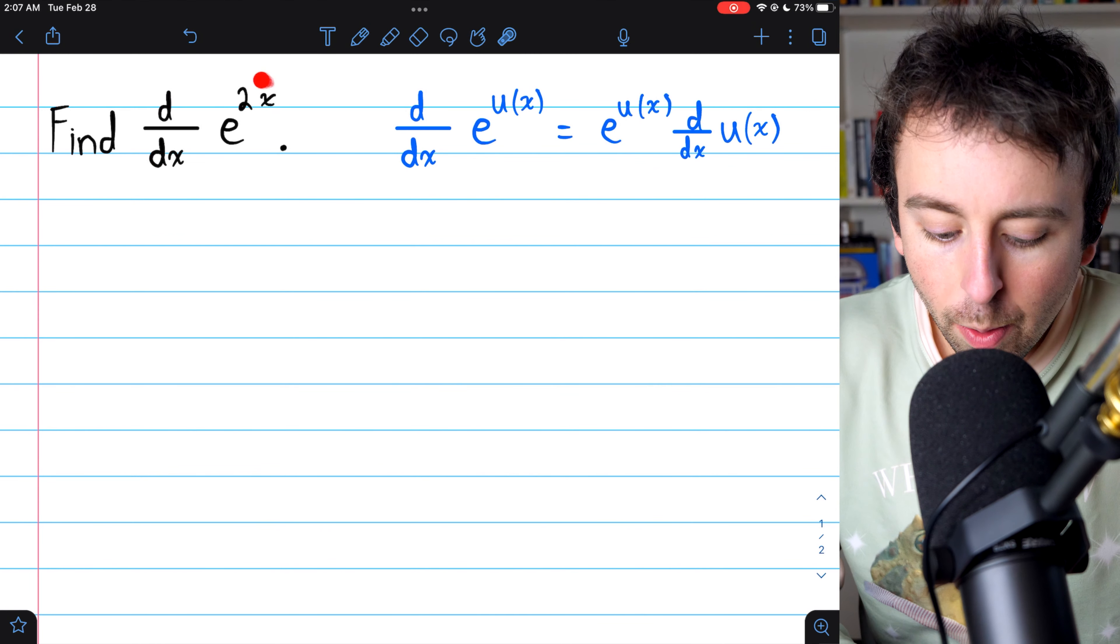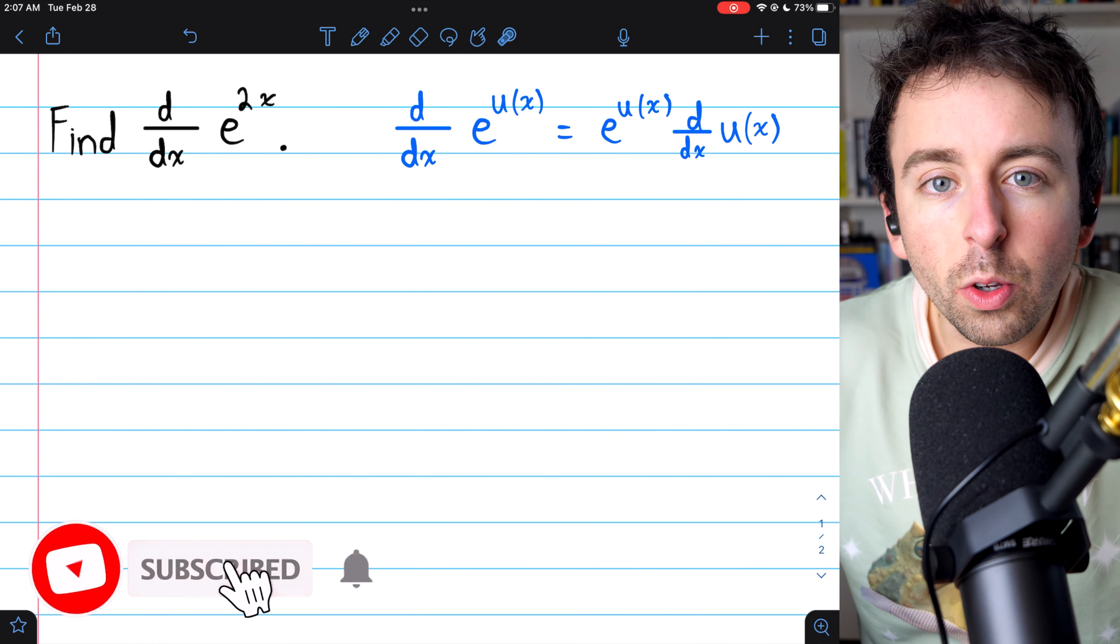To find the derivative of e to the power of 2x, we simply use the chain rule.